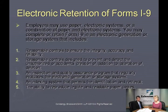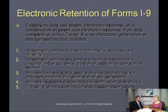You need reasonable controls to ensure the integrity, accuracy, and reliability of the records. That includes controls designed to prevent and detect unauthorized or accidental creation, addition, or alteration — you want to make sure they can't be altered, that they're static documents. You also need an inspection and quality assurance program that regularly evaluates the electronic generation or storage, an indexing system that permits identification and retrieval, and the ability to reproduce legible and readable paper copies. If ICE comes in and does an inspection, they're going to ask you to produce paper copies and print them out for inspection.